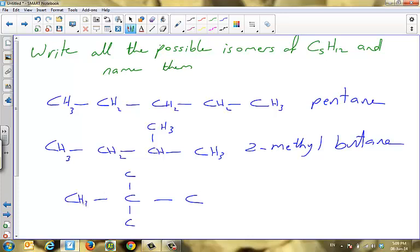Here we have CH3, CH3, CH3, CH3, CH3. So this one is going to be 2,2-dimethyl propane. So we have only three possible isomers for C5H12.